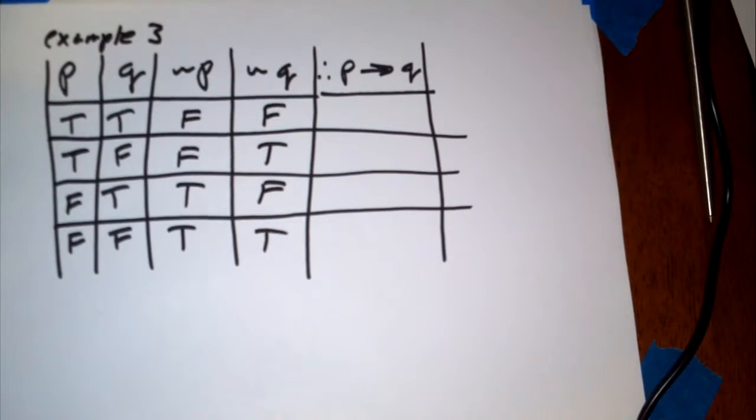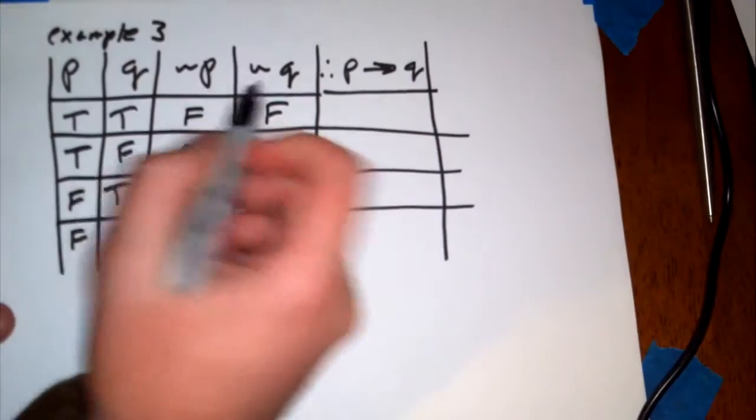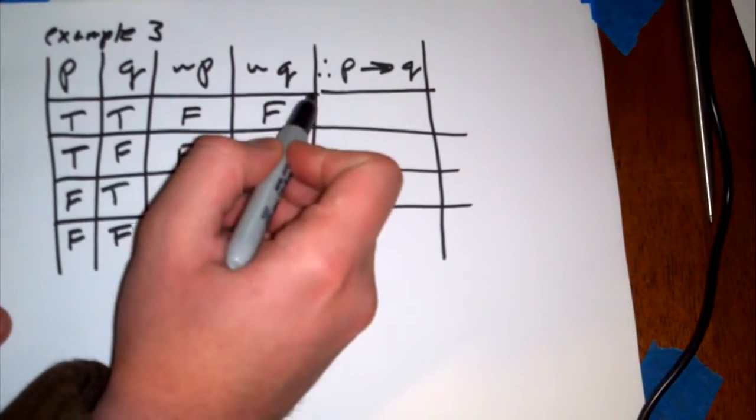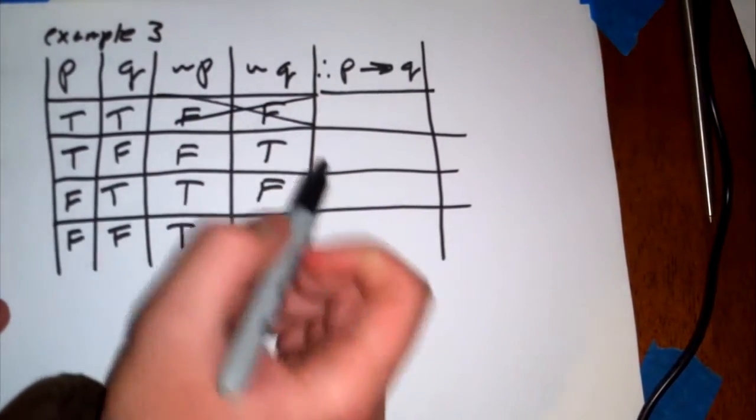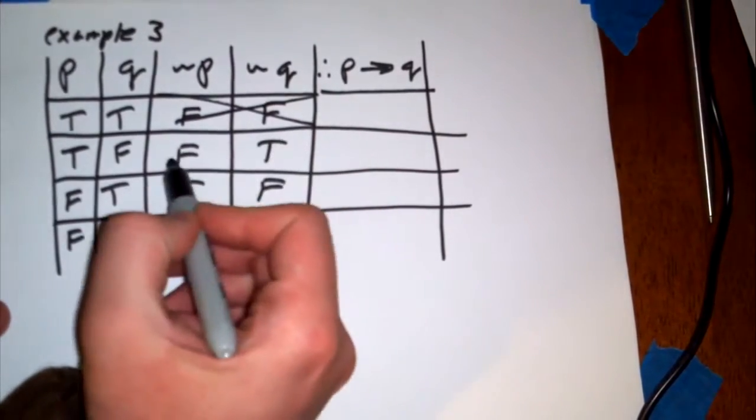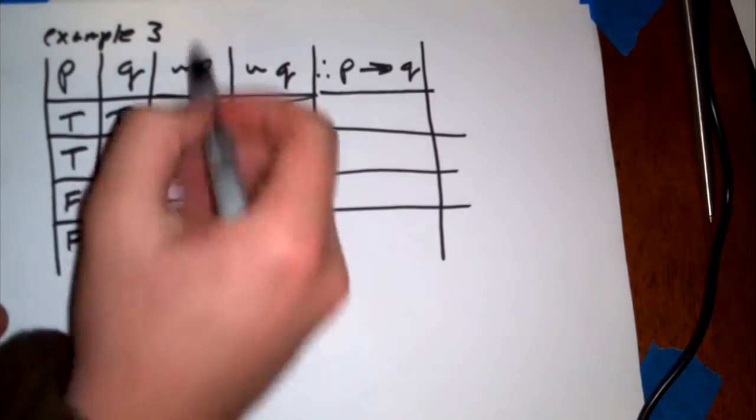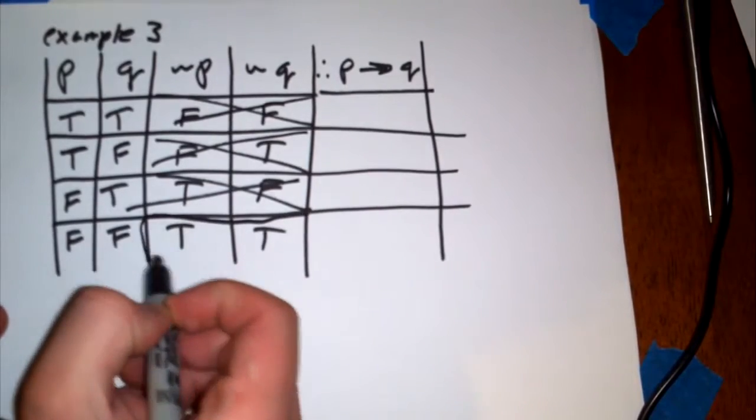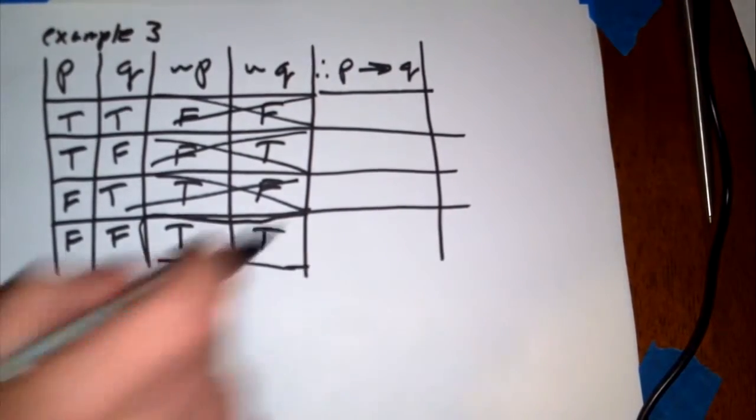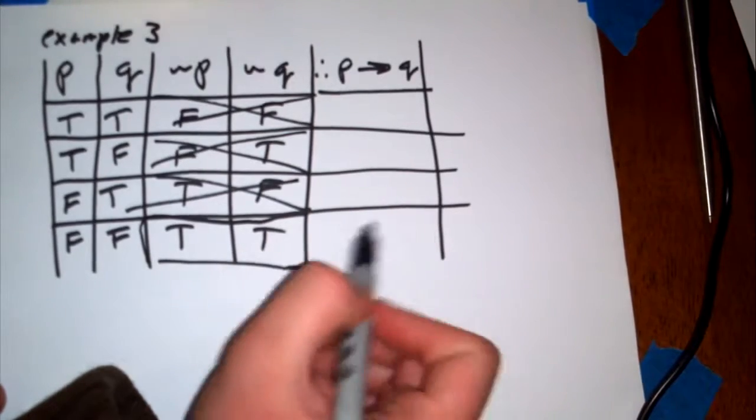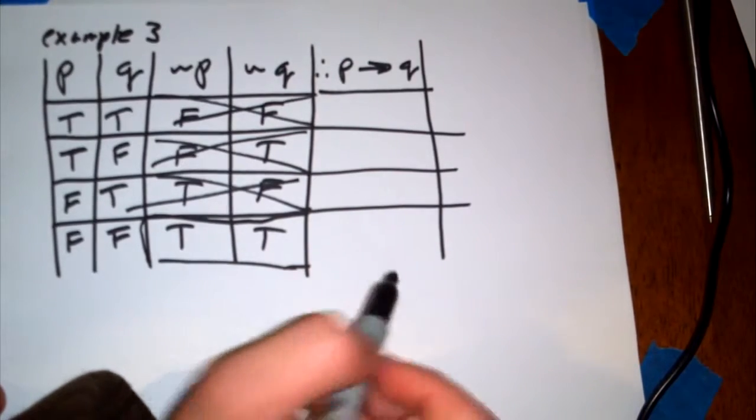For this to be true, we have to look at what are called the critical rows. A critical row is that if all of the statements are true, then that's a critical row. In this first one, these are both false, so we don't really care about that. That's not a critical row. This one is also not a critical row because one of them is false. This one is also false. But this last one here is a critical row. That means that this statement here, whatever we get, has to be true in order for this example to be true.